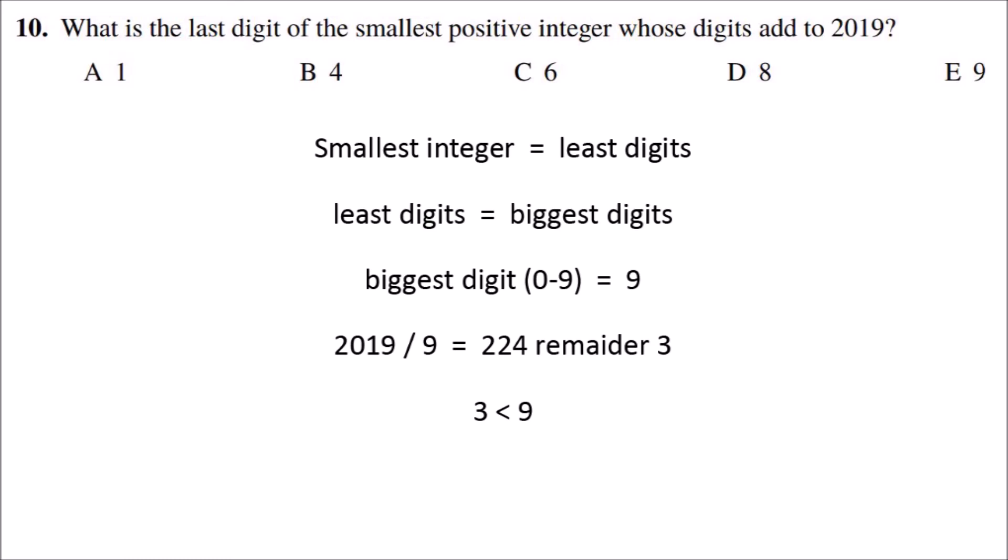To be the smallest positive integer, that number would have to go at the front, which means that all remaining digits would be a 9, which includes the last digit. So that means the answer is E, 9.